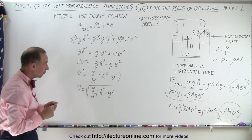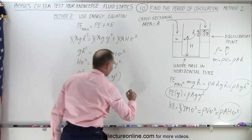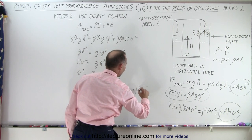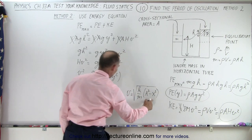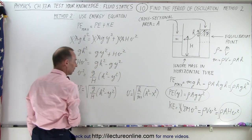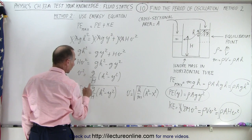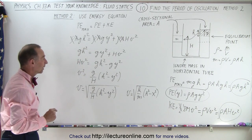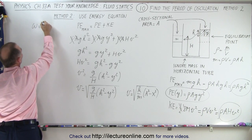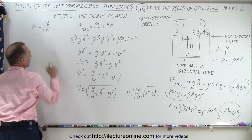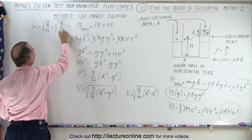This should look very familiar, because when we do the same thing with a spring and mass, we find that V equals the square root of K over M times (amplitude² minus X²). We have a very similar equation, which means the square root of K over M corresponds to the square root of G over H in this case. And since the angular frequency omega equals the square root of K over M, in our case omega must equal the square root of G over H.